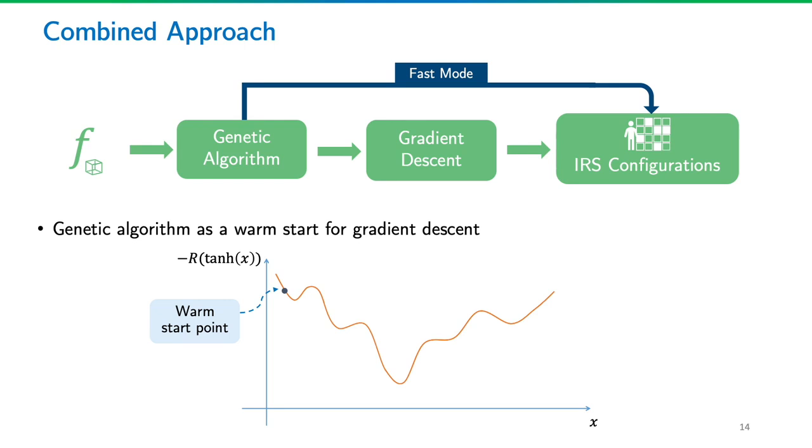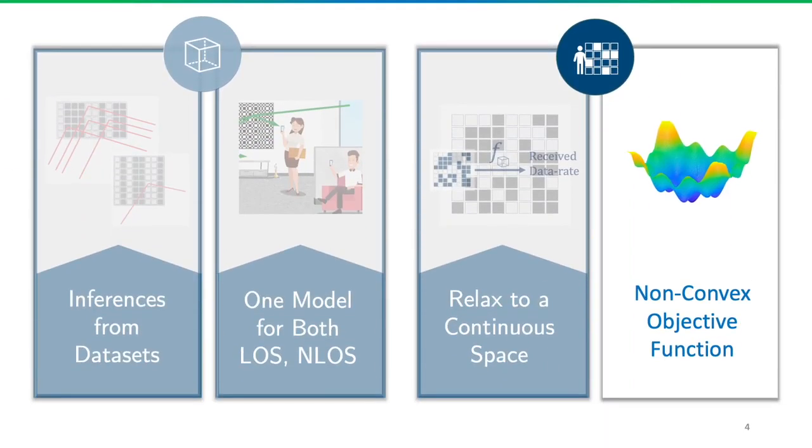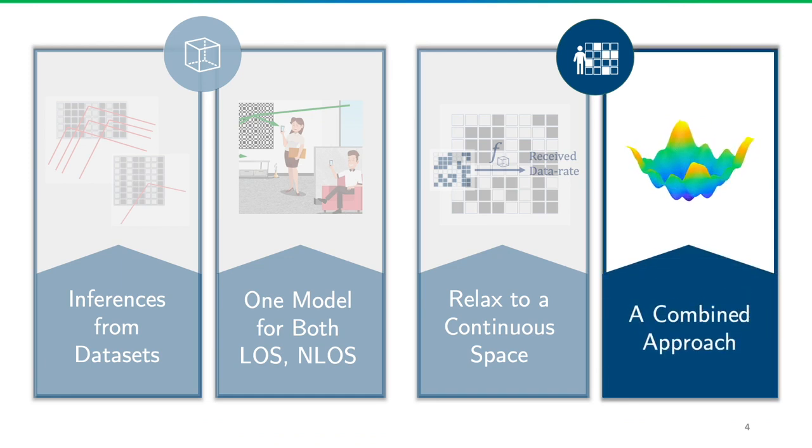If we further want to improve the data rate by spending more time and computational resources, we can run gradient descent and genetic algorithm alternatively. Then, if we are in a local minima, we can possibly escape from it through a mutation in the genetic algorithm. With this, we have a complete algorithm to estimate the channel and search the configuration for each user.